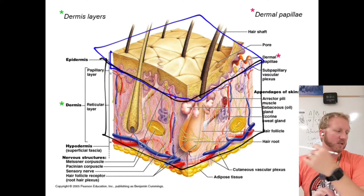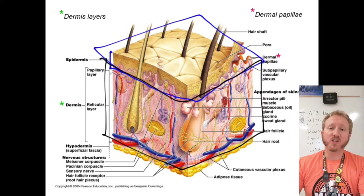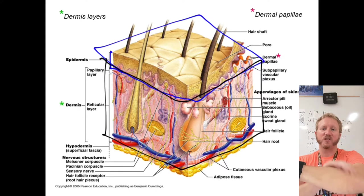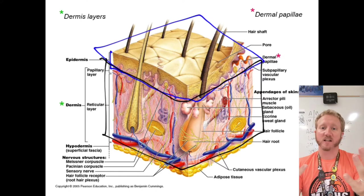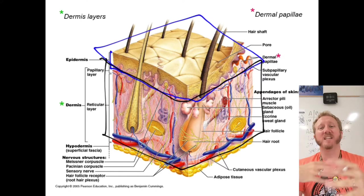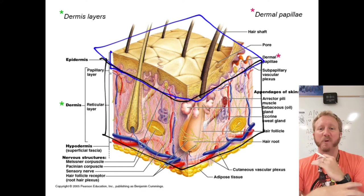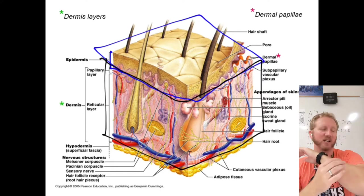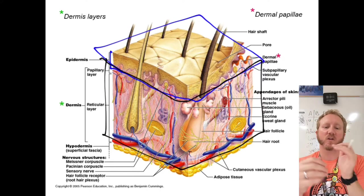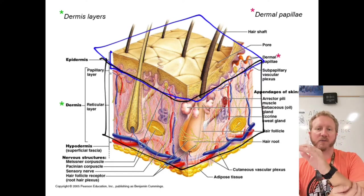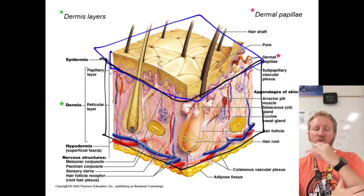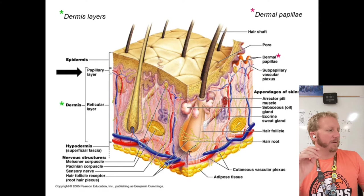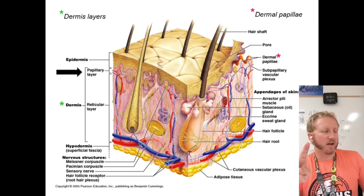The dermis is highly vascularized because cells are constantly dividing and need plenty of nutrients. The skin also detects environmental conditions — if it's too hot or too cold — and is critical in maintaining body temperature.